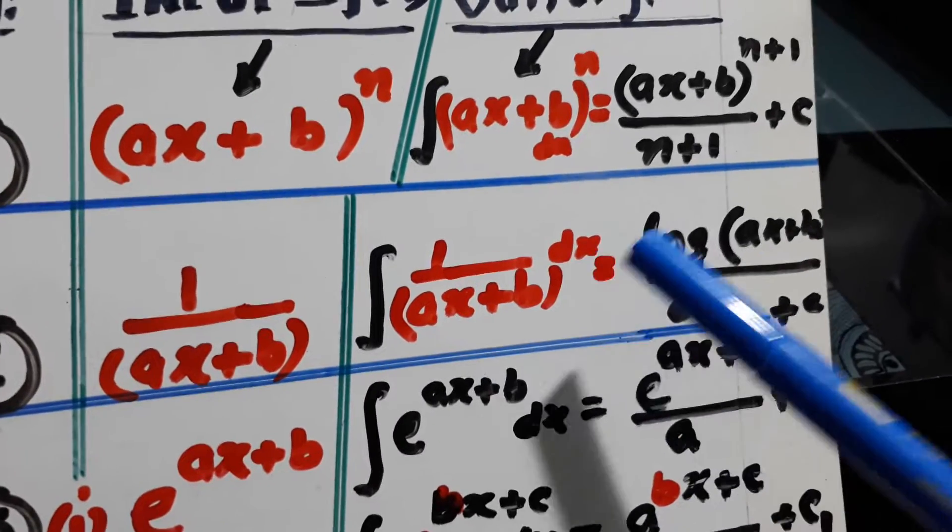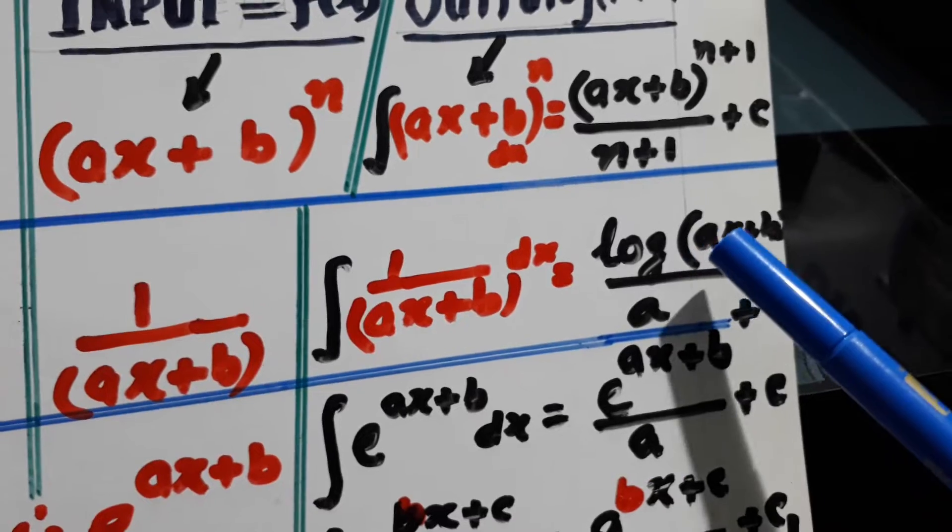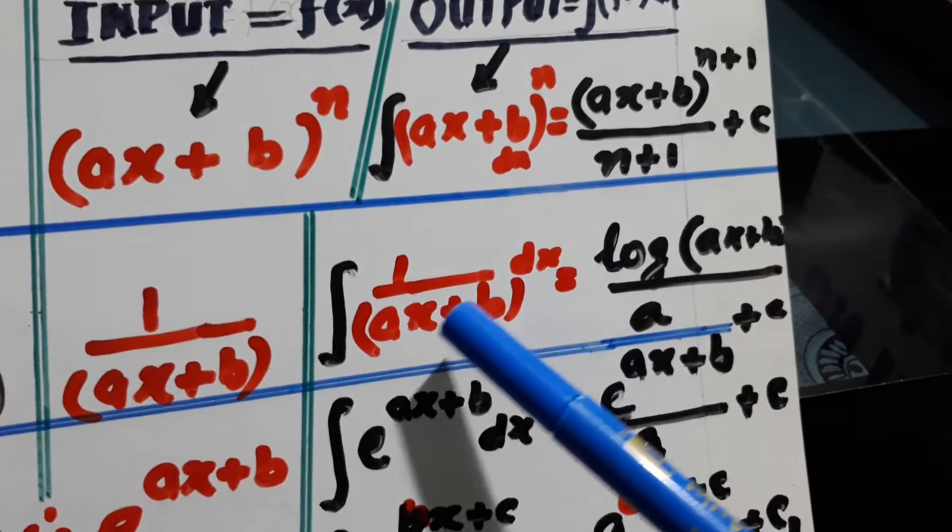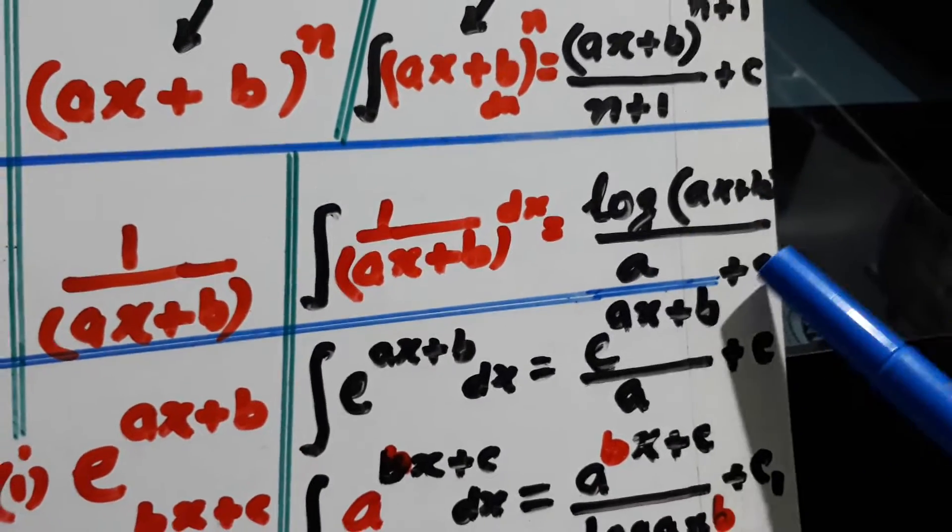That is, here it is (ax+b). It will be log(ax+b). But it is not x. So take its derivative. (ax+b)'s derivative is a. Put it in the denominator. Plus c.